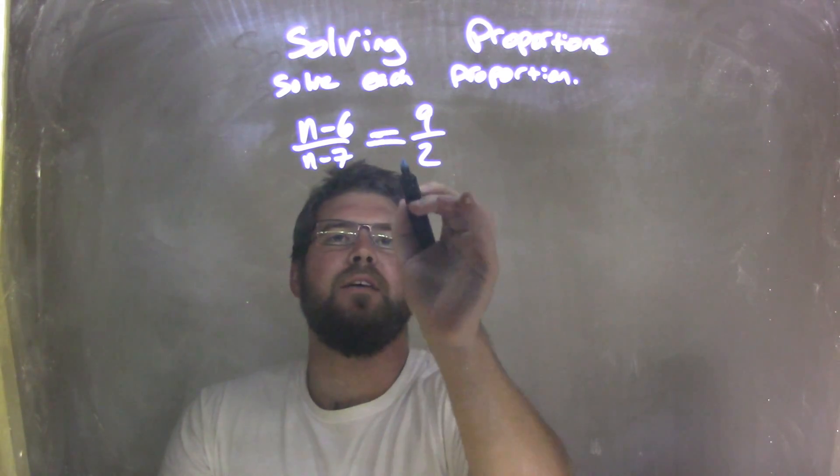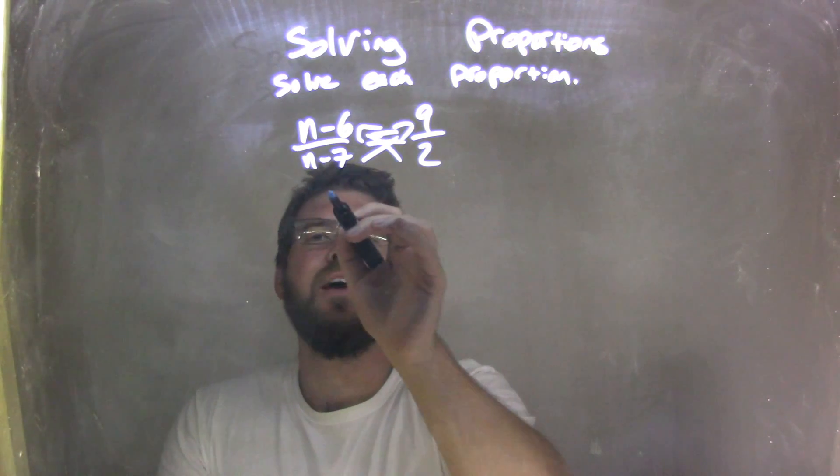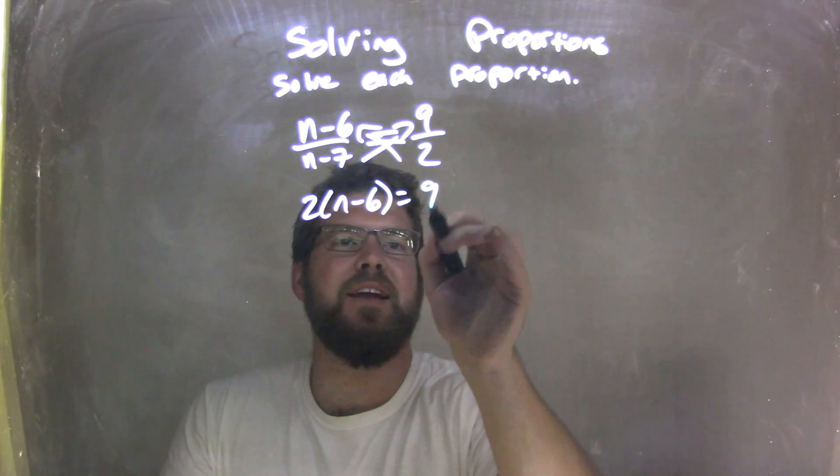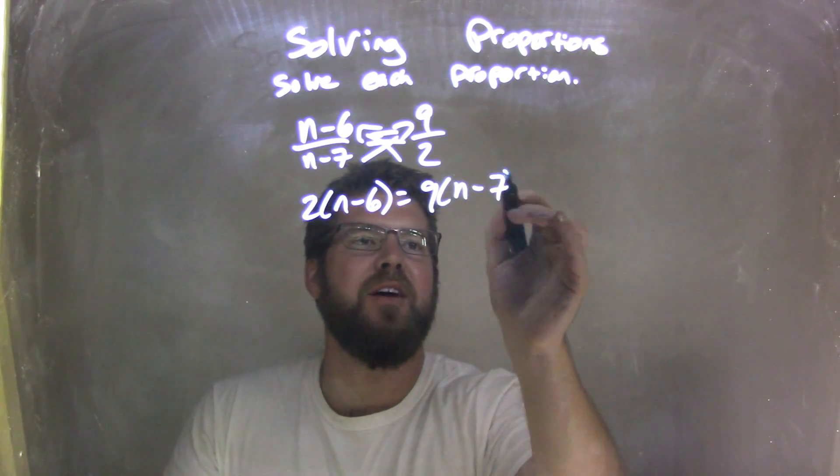I need to cross multiply. So I'm going to cross multiply both sides here, or both parts here, giving me 2 times n minus 6 on the left equals 9 times n minus 7 on the right.